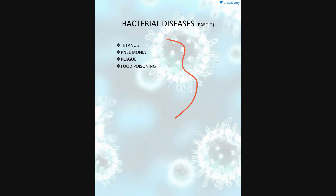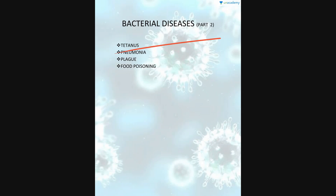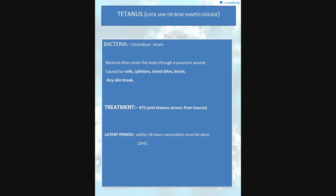We have to talk about tetanus, pneumonia, plague, and food poisoning. For tetanus, the bacteria is Clostridium tetanus. This bacteria often enters the body through a puncture wound — a skin break or cut can be used by the bacteria to enter the body.